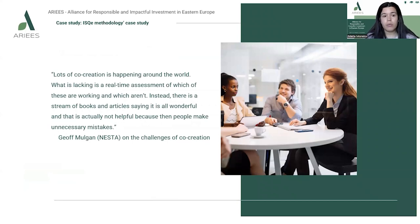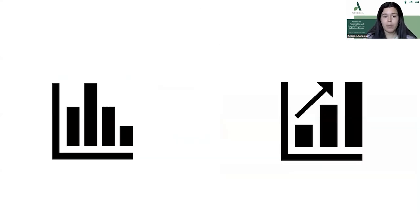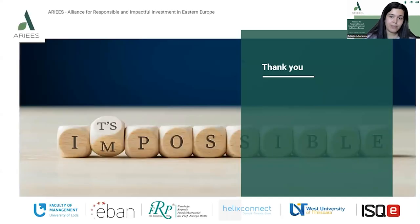We finish with a quote from Jeff Mulgan on the challenges of co-creation: 'Lots of co-creation is happening around the world. What is lacking is a real-time assessment of which of these are working and which aren't. Instead, there's a stream of books and articles saying it is all wonderful — and that's actually not helpful because then people make unnecessary mistakes.' I hope this was clear. It's important to organize the co-creation process in order to achieve progress. Thank you.